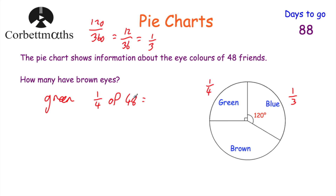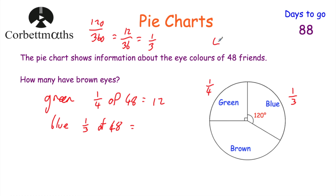For green eyes: a quarter of 48. To find a quarter, divide by 4 — half of 48 is 24, half again is 12. So 12 friends have green eyes. For blue eyes: a third of 48. To find a third, divide by 3 — 48 divided by 3 is 16. So 16 friends have blue eyes.